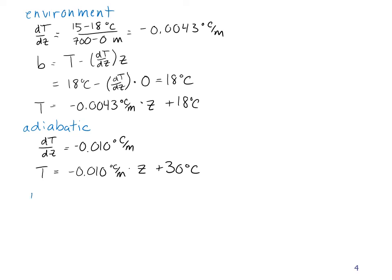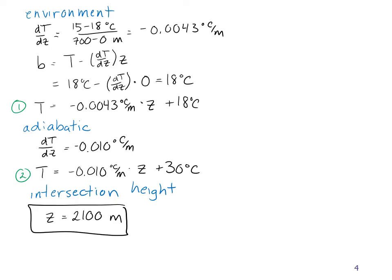And now the intersection height I can solve for by solving these two equations for T and z where these two lines intersect. You know how to do that, so you don't need to watch me do it, but I come up with a value of z equals 2100 meters, which is my maximum mixing depth.